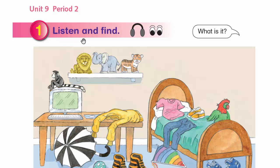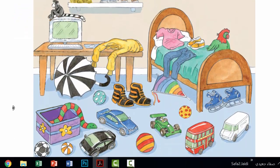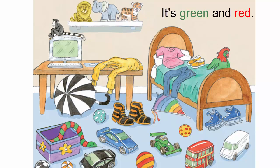Listen and find. 1. It's green and red. It has two legs. What is it?